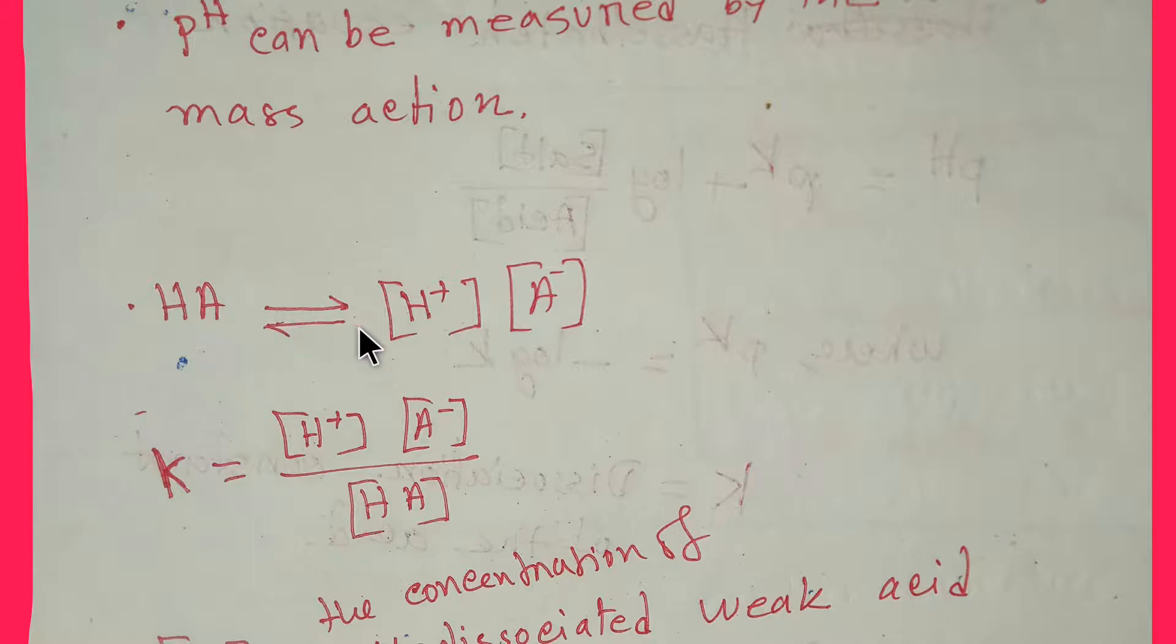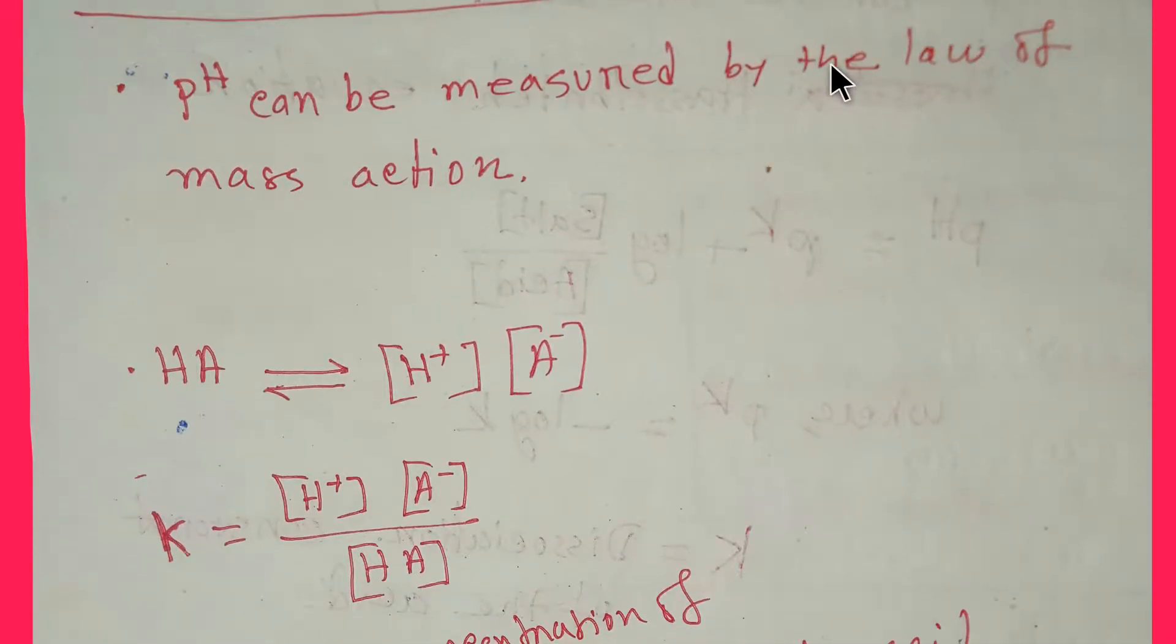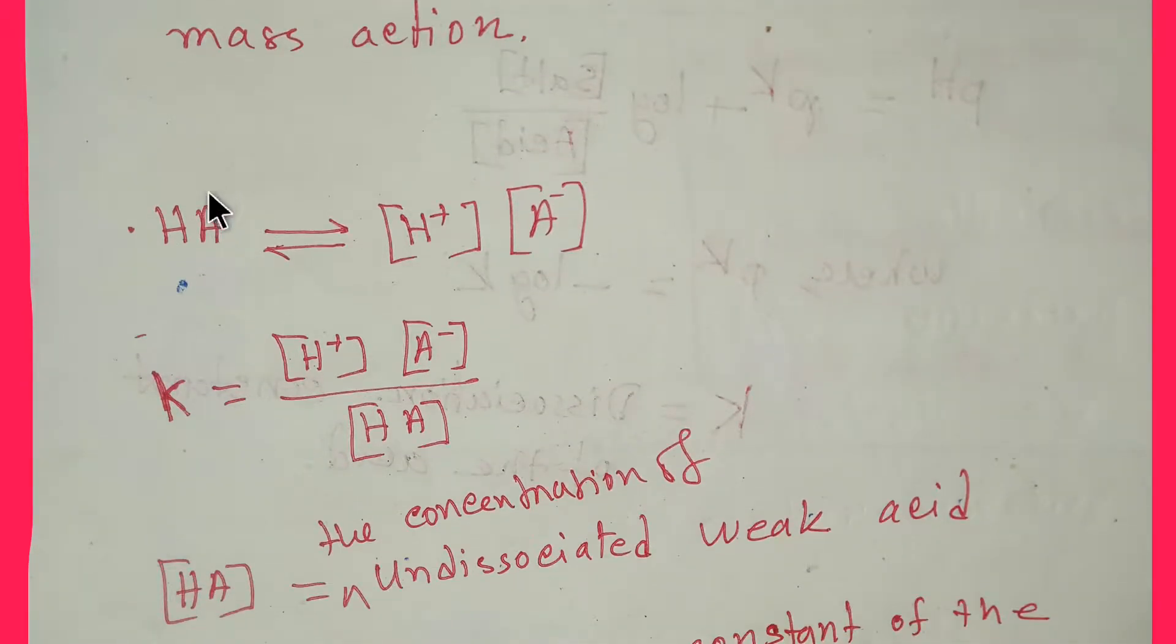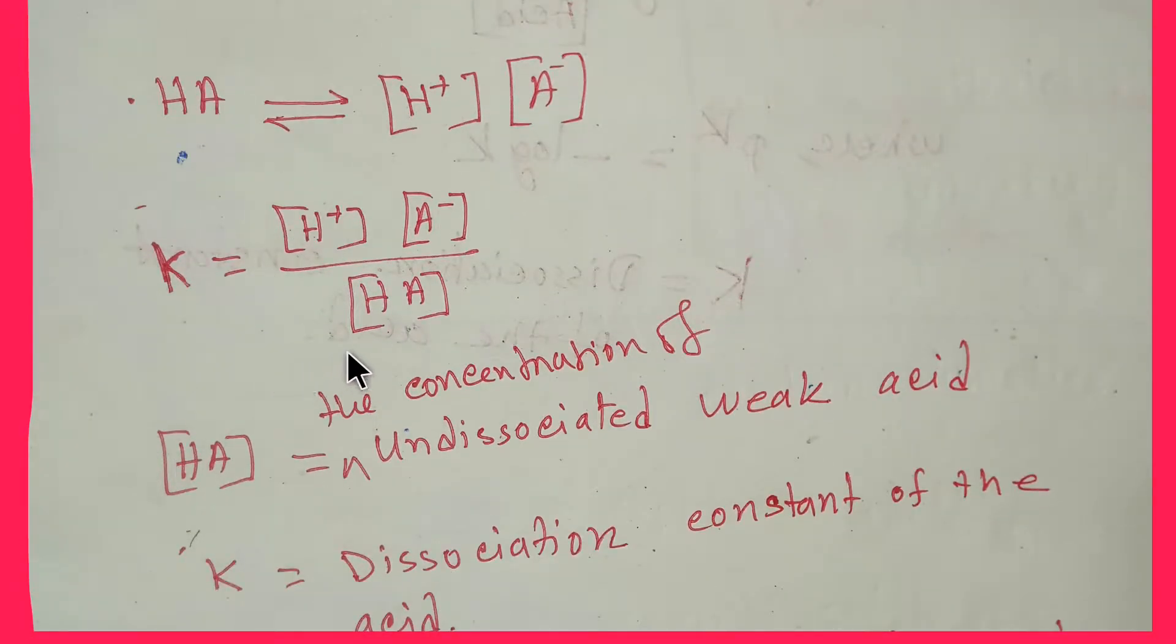So by applying the law of mass action, the dissociation constant of this acid will be the concentration of the product divided by the concentration of the reactant. And HA denotes the concentration of undissociated weak acid. This is it, and K is the dissociation constant of the acid.